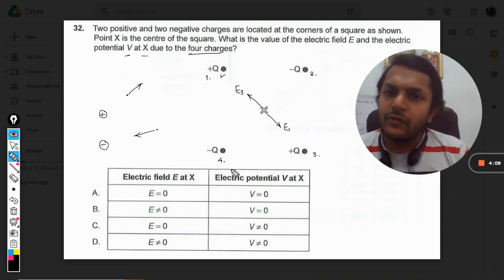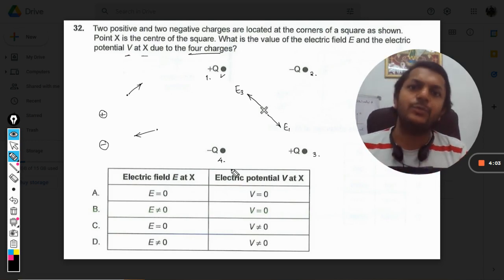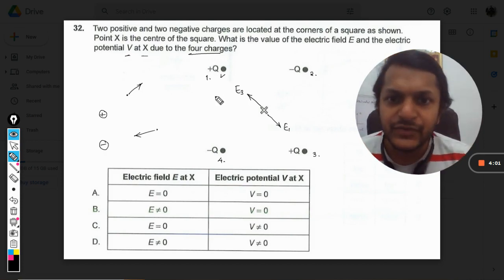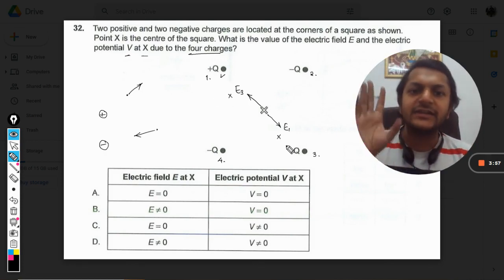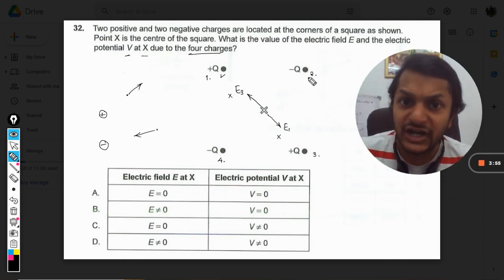Now we know that because the distances are the same and the charges are the same, the magnitude of E1 will be equal to E3. And they are opposite to each other, so they will cancel each other. So these two cancel each other.